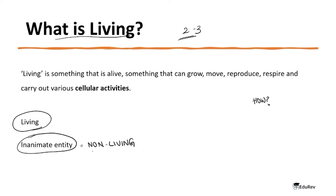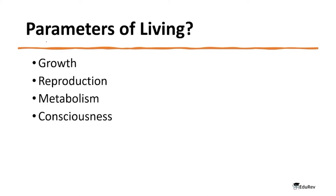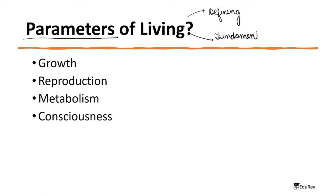Living is something that has life — something that can grow, move, reproduce, respire, and carry out various cellular activities. To define a thing as living, we follow some parameters. These parameters can be divided into two main features: the defining characteristic and the fundamental characteristic. There are four parameters of living that we will discuss — the first one is growth.